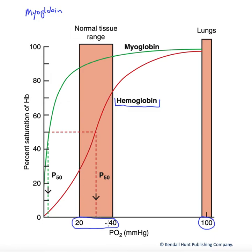When we go from 40 at rest down to about 20 in active tissues, we get a dramatic increase in the unloading of oxygen to those tissues. If we look at the myoglobin curve, what we see is that it is dramatically left-shifted of the hemoglobin curve. This indicates that it has a much higher affinity for oxygen.